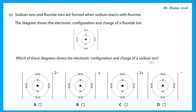Sodium ions and fluoride ions are formed when sodium reacts with fluorine. Remember that fluorine has the configuration two, seven — it has seven electrons in the outer shell. When it makes an ion, it gains an electron, and that means it now has an extra negative charge. That is the fluoride ion.